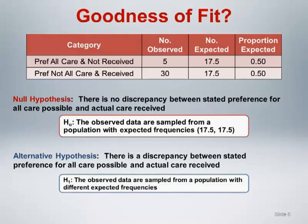The alternative hypothesis is that there is a discrepancy between stated preference and actual care received. In terms of goodness of fit, this means that the observed data are sampled from a population with different expected frequencies than those assumed under the null.